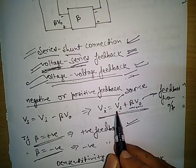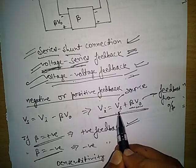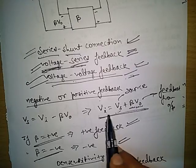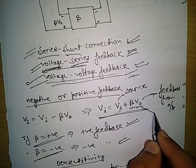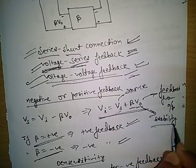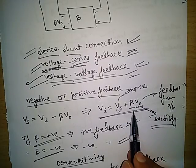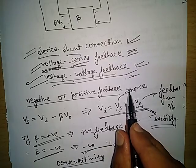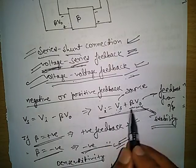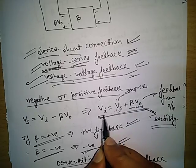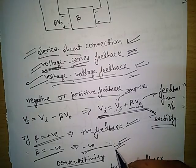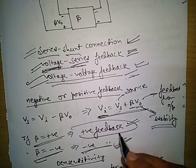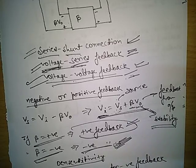When β is negative, the input becomes less than the source value — this is negative feedback. In positive feedback, as the output increases the input also increases, causing instability. Negative feedback is stable because the feedback reduces the effective input. Positive feedback is rarely used; we use negative feedback amplifiers in practice.